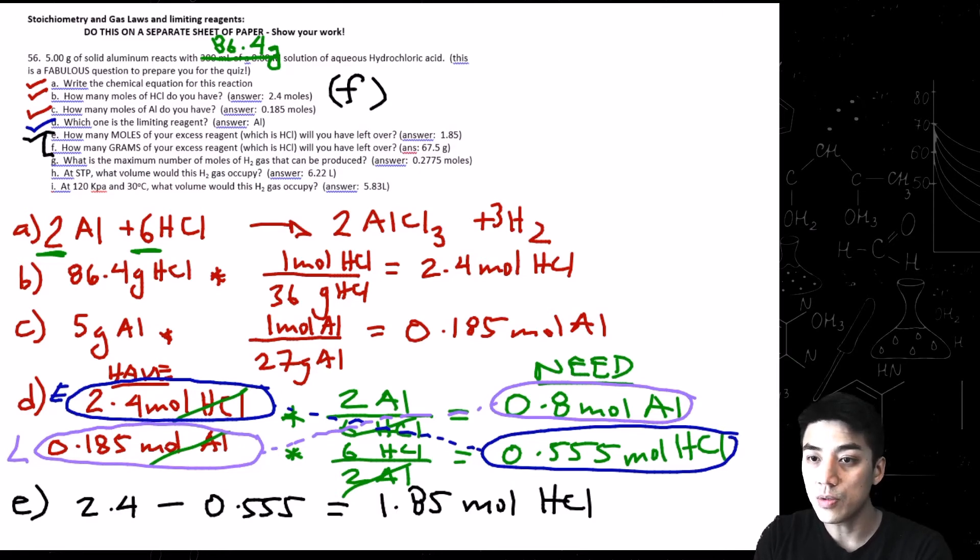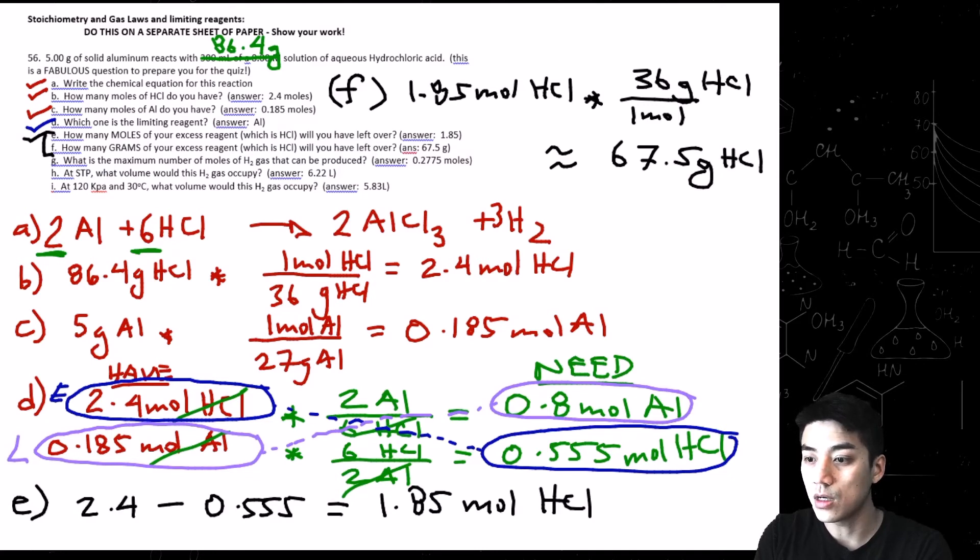And then letter F, I'm going to do up here because we're running out of room. Letter F, simply take your moles of HCl, 1.85. And now we're going to change this to grams. So you guys should be proficient with this by now. Multiply by the molar mass, and we're going to get 67.5 grams of HCl. So that's how much is left over.